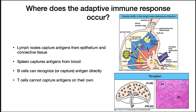So where does the adaptive immune response occur? It occurs in the lymph nodes. Lymph nodes are all throughout your body, and they're connected by the lymph vascular system. The spleen also captures antigens from your blood. Besides being a reservoir for red blood cells, the spleen also behaves like a giant lymph node and captures and detects antigens from your blood.